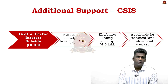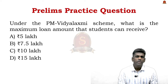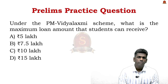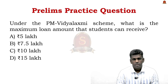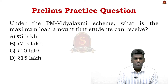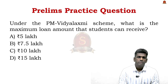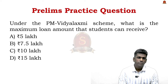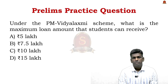MCQ on PM Vidya Lakshmi Scheme: What is the maximum loan amount students can receive? As discussed, the correct answer is Option B — ₹7.5 lakhs — which covers both tuition fees and academic expenses. With this, let us conclude the discussion and move to the next news article.